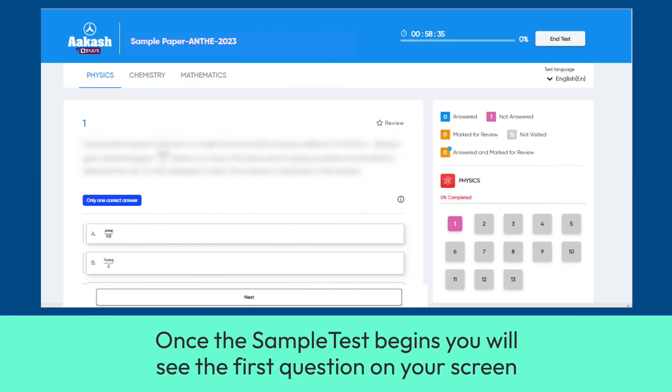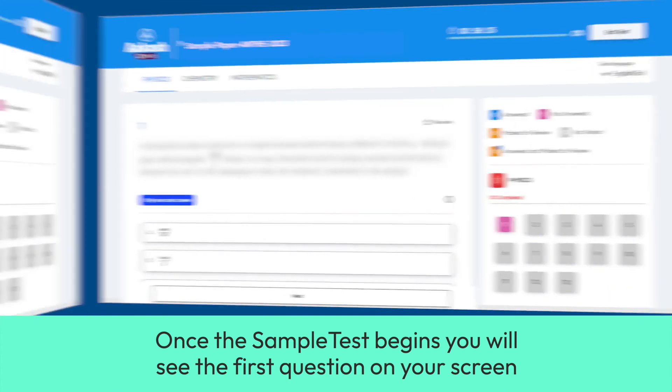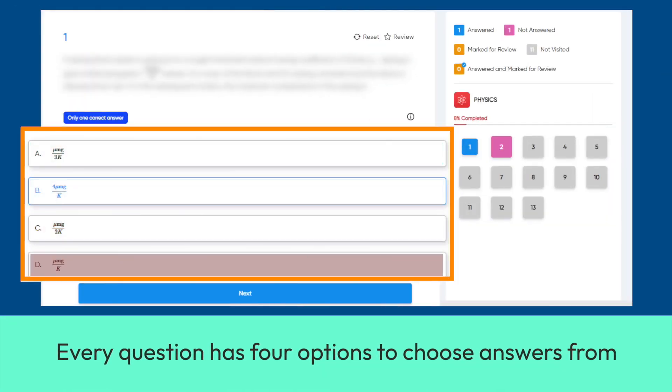Once the sample test begins, you will see the first question on your screen. Every question has four options to choose answers from.